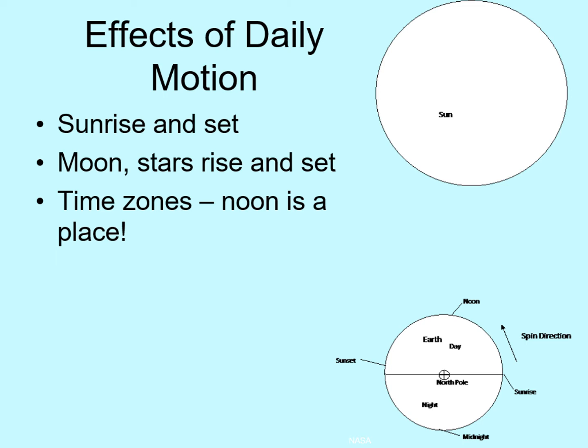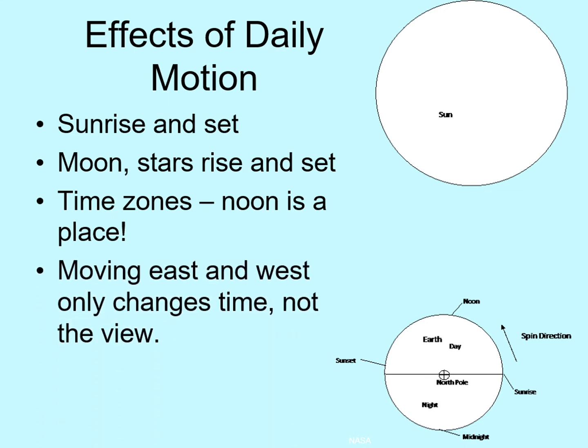This also affects what we see in the sky. If you want to see what's in the sky over the East Coast, just wait a few hours and we'll have the same view. Another way of saying that is that moving east or west on the globe only changes what time it is, not what you will see at a given time. So if we see a star overhead at 9 p.m., then someone on the other side of the globe will see the same star overhead when it's 9 p.m. where they are.